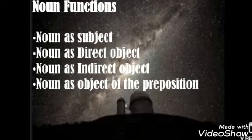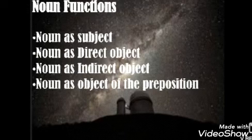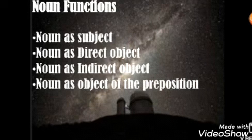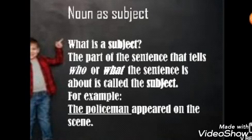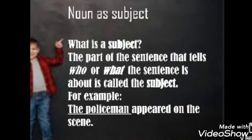A noun may be placed as the subject of a sentence, as the direct object, as the indirect object, or as the object of the preposition. First we will read about noun as subject. What is a subject? The part of the sentence that tells who or what the sentence is about is called the subject.